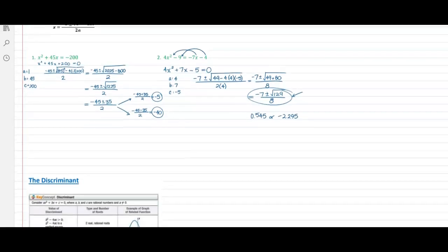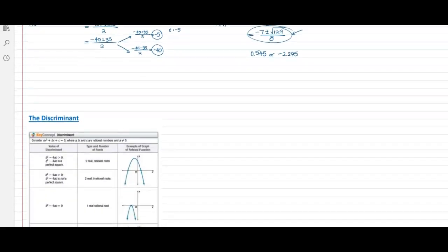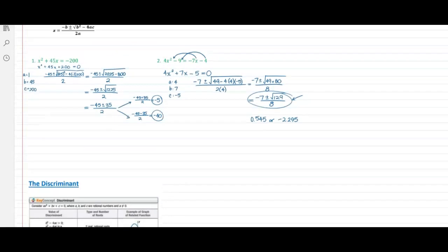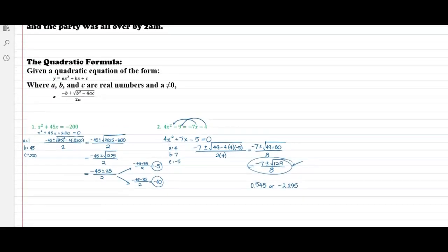So this number under the radical is called the discriminant. Everything under the radical is discriminant. B squared minus 4ac.